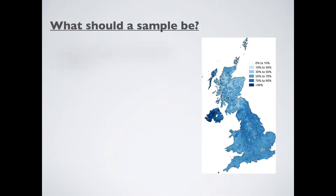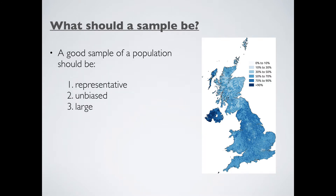So what should a good sample be? Ideally, our sample should be three things: representative, unbiased, and large. Being representative means the sample should contain the same mix of people and behaviours as found in the target population — same religion, same mix of males and females, and so on. This is less likely to happen if our sample is biased, meaning it is distorted by having too many or too few people from certain groups within the target population.